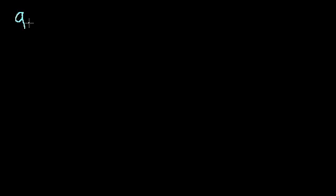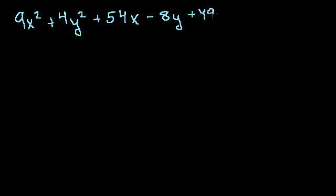So what I have here is 9x squared plus 4y squared plus 54x minus 8y plus 49 is equal to 0. And who knows what this is? It's not in the standard form.